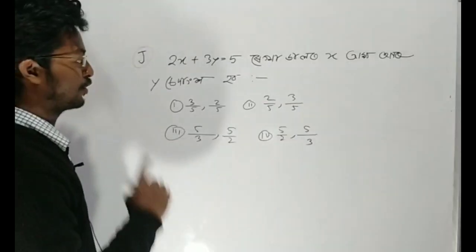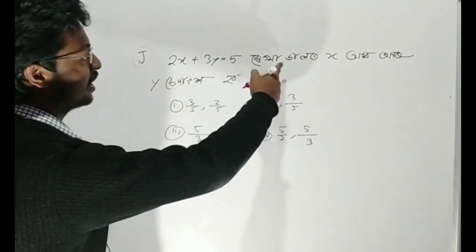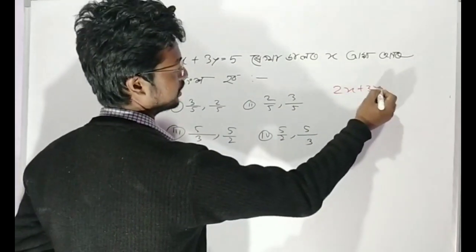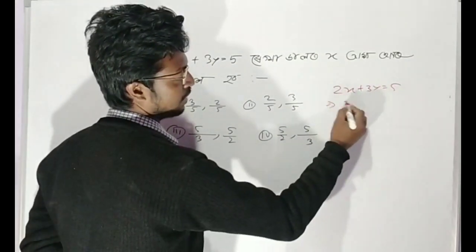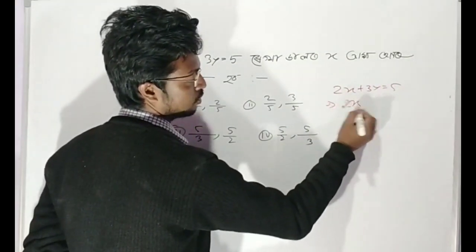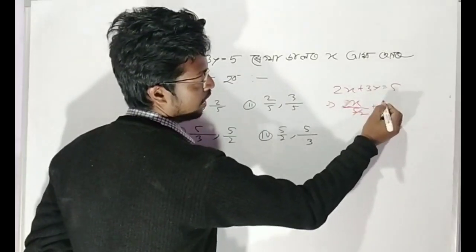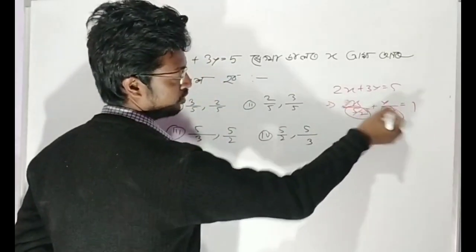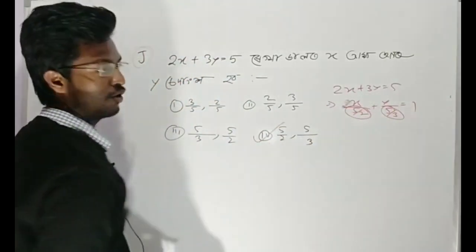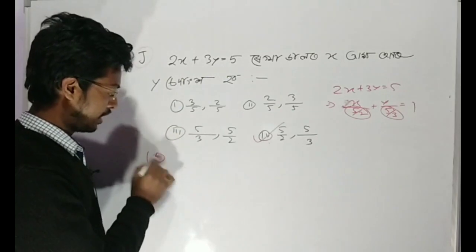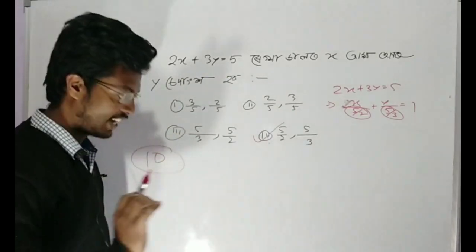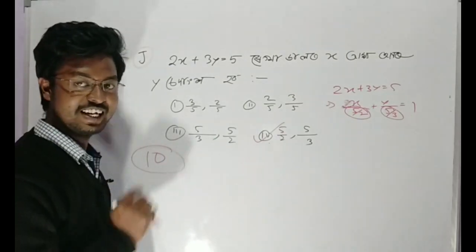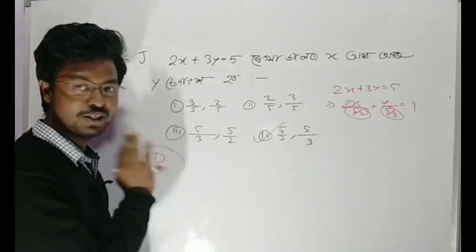Last question to sum. The question is: x is equal to y, y is equal to 5, x is equal to 5, x is equal to 5 by 2, y is equal to 5 by 3. The answer is 5 by 2, 5 by 3. So if you are doing this MCQ, that's the question.